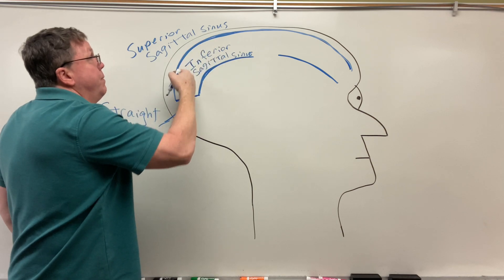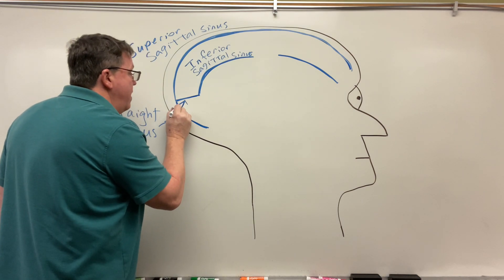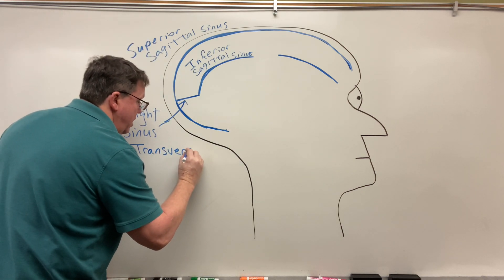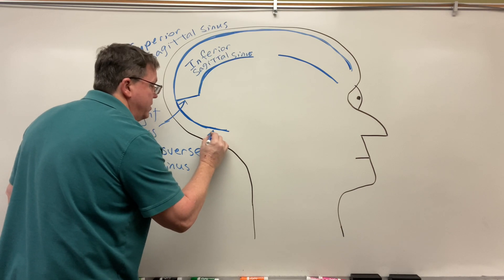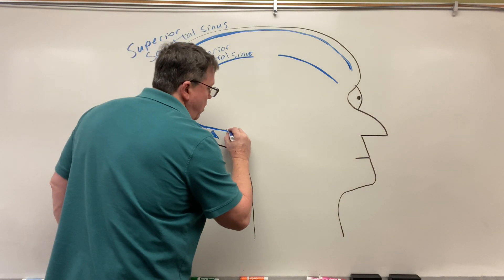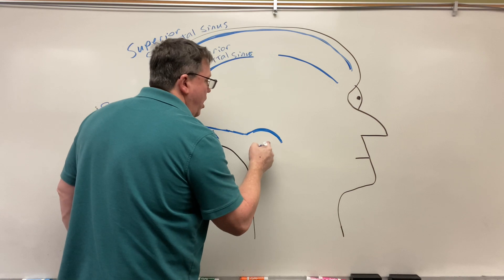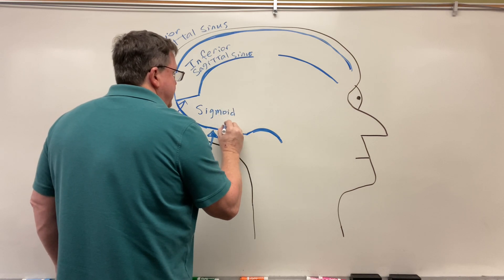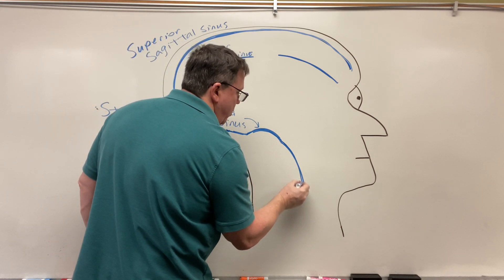My straight sinus and my superior sagittal sinus are going to meet. Once they meet, they come down and this is going to be called my transverse sinus. Now you're looking at this from the side — you're actually going to get a little wave here, and we're going to call this our sigmoid sinus. If you notice it's S-shaped. And then my sigmoid sinus is going to drain into my internal jugular.